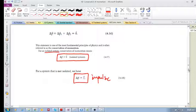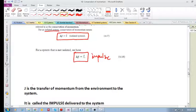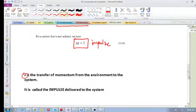So if momentum is transferred across the boundary, we have impulse. J is simply the transfer of momentum from the environment to the system, and it's called the impulse delivered to the system.